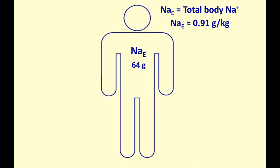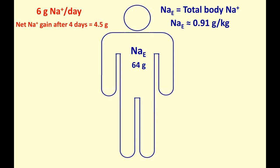Let's say that this man has systolic dysfunction with an ejection fraction of 30%, and he goes into a high sodium diet — 6 grams of sodium per day. At the end of four days, this man is going to gain about 4.5 grams of sodium. His total body sodium will increase from 64 grams to 68.5 grams. So the question is: what would be the clinical manifestations in this person who has gained total body sodium?